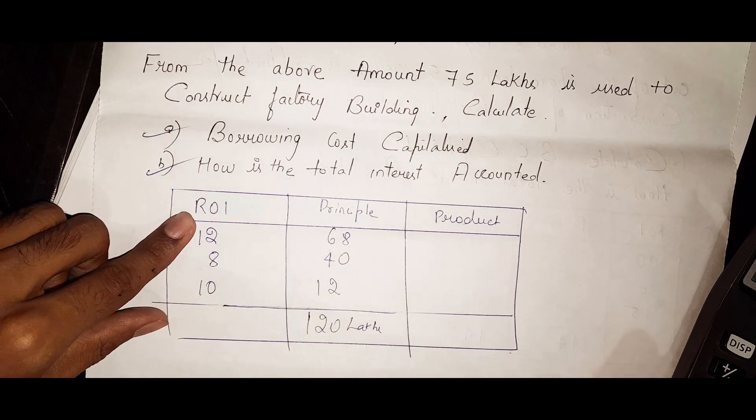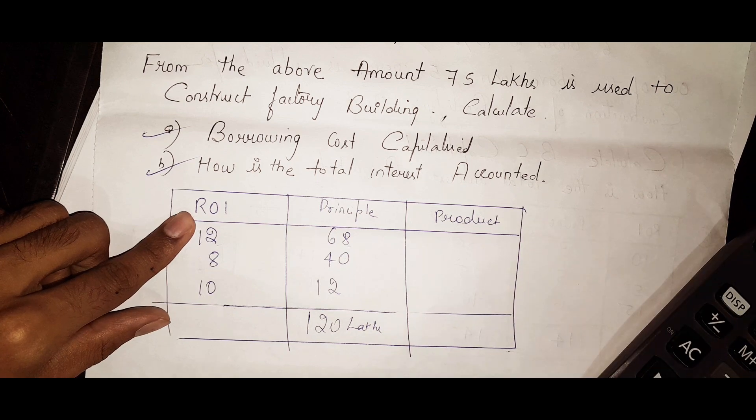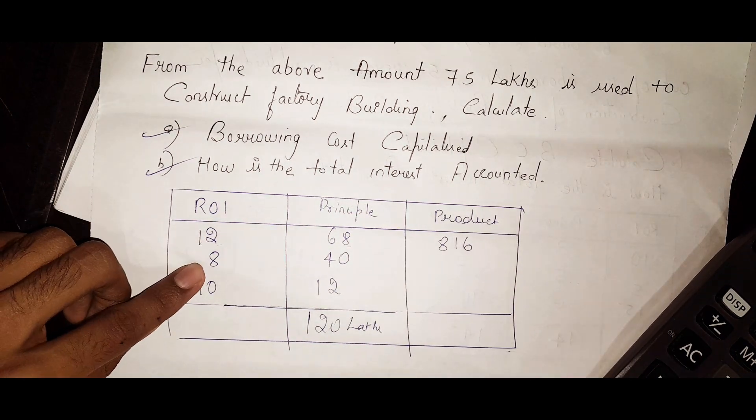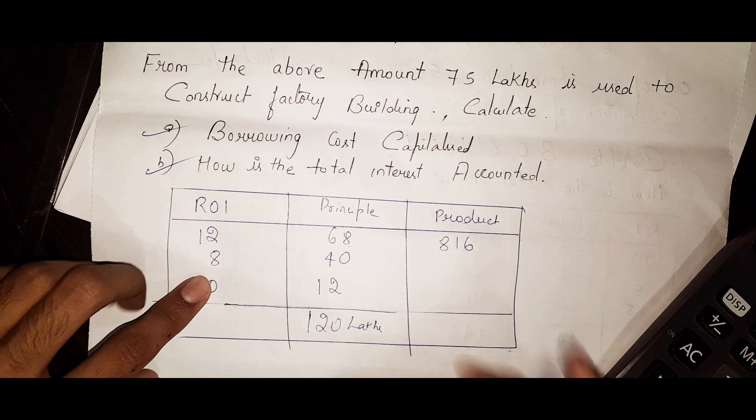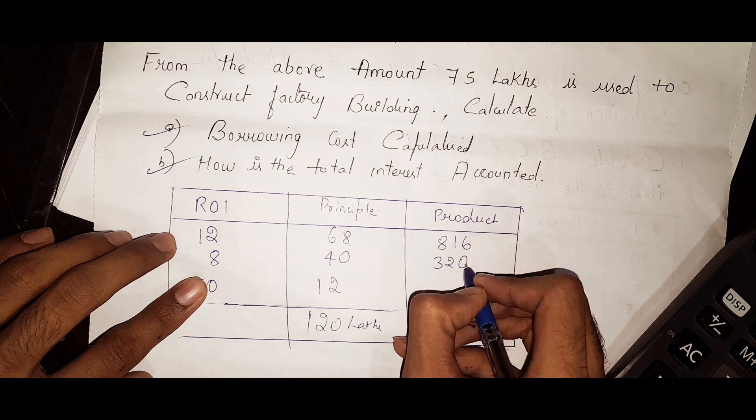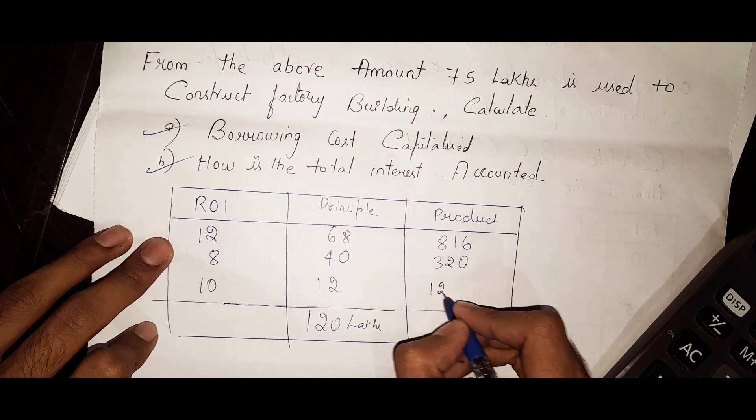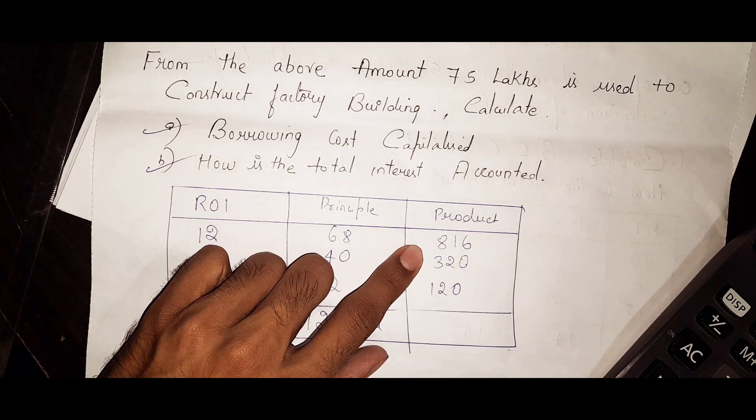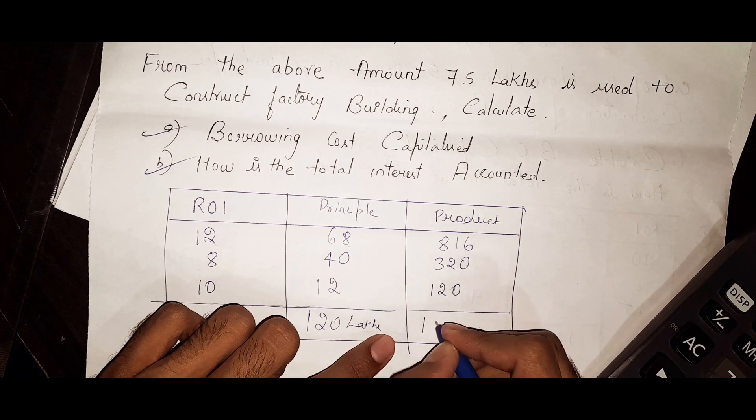Now multiply these two: 68 into 12 will be 816, 40 into 8 is 320, 12 into 10 will be 120. Now add all these three: 816 plus 320 plus 120 will be 1256.